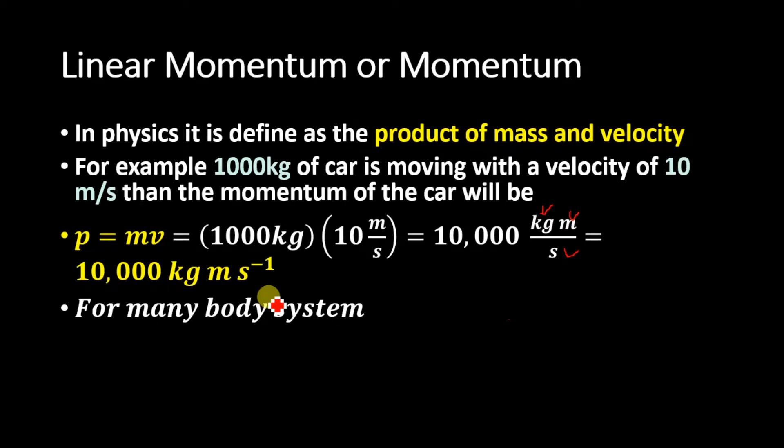For a many body system, the total momentum will be equal to the sum of all the momentums. For example, if we have a many body system, then the total momentum will be equal to momentum of particle 1, momentum of particle 2, and so on.